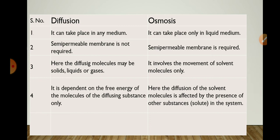Here is the difference between diffusion and osmosis. Diffusion takes place in any medium and a semi-permeable membrane is not required; diffusing molecules may be solid, liquid, or gas, and it depends on the free energy of molecules. Osmosis takes place only in a liquid medium, a semi-permeable membrane is required, and it involves movement of solvent molecules only. In osmosis, the diffusion of solvent molecules is affected by the presence of other substances — meaning the presence of solute affects the rate of osmosis.